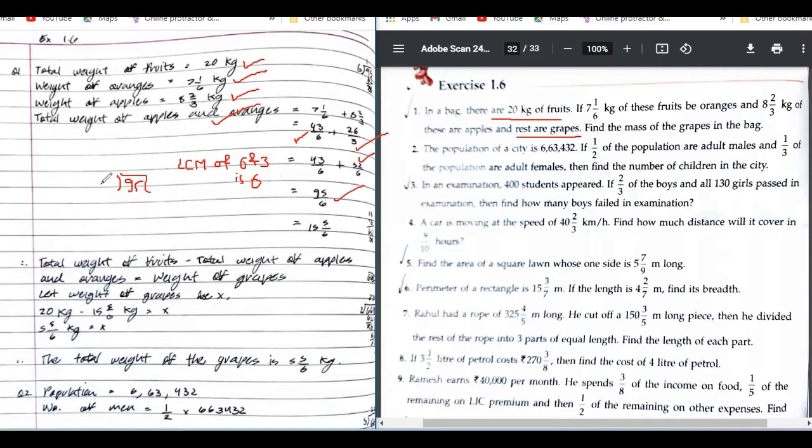Okay, this here is the calculation: 3, 5, 6, 30. Yeah, perfect. 15 5/6. Total weight of fruit minus total weight of apples and oranges equals weight of grapes. Good, I'm glad that you are writing the formula. So subtracting these two.